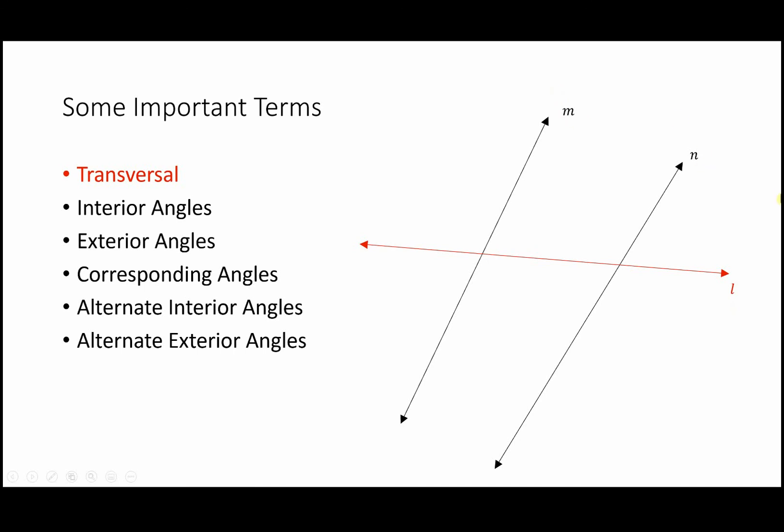M and N are not necessarily parallel — they could be if there was some designated symbology or statement off to the side saying they were parallel, and then myriad other things could be assumed about pairs or collections of angles. To reiterate: line L is acting as a transversal — a line that crosses two or more other lines. In this case, lines M and N are the ones being crossed by transversal line L.